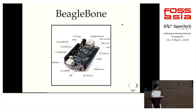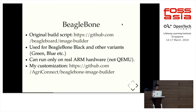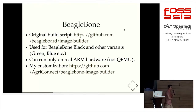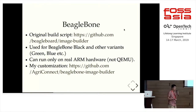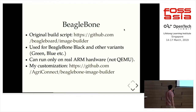Now let's look at the BeagleBone board. Here is the original build script. This build script is used for many variants of BeagleBone, like BeagleBone Black, Green, and Blue. And this script can only run on real hardware — we cannot run it on our PC via QEMU. The last link is my customization.